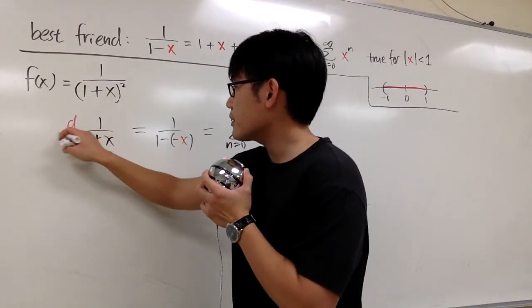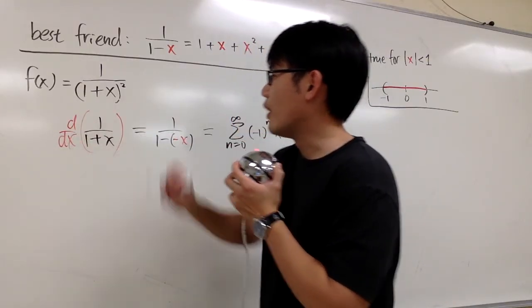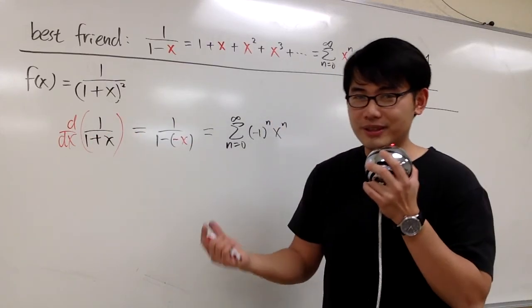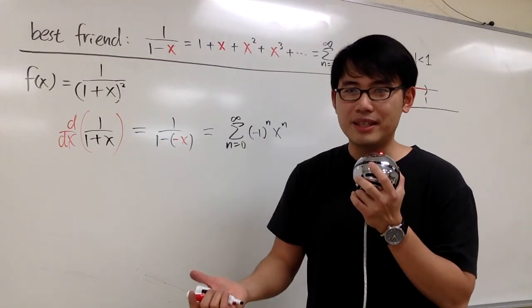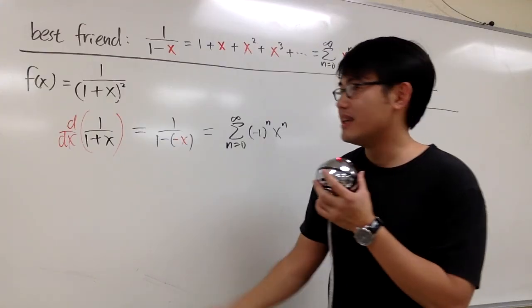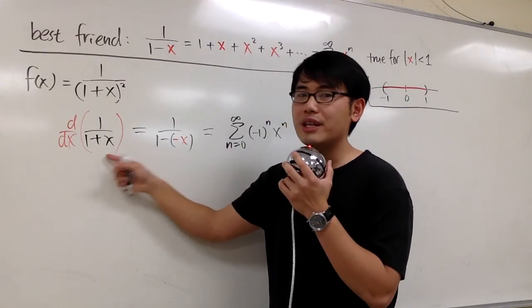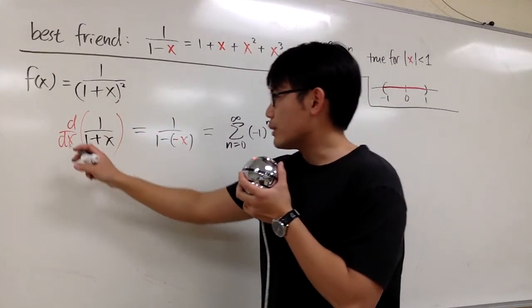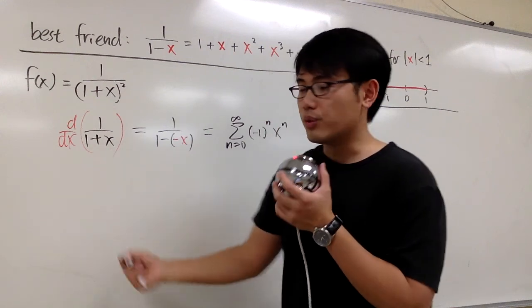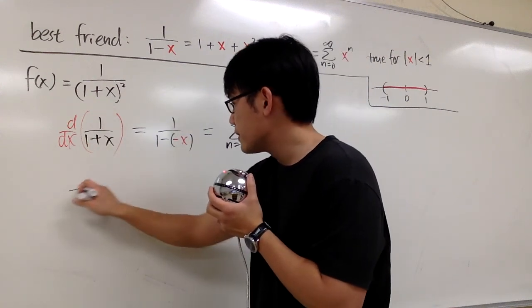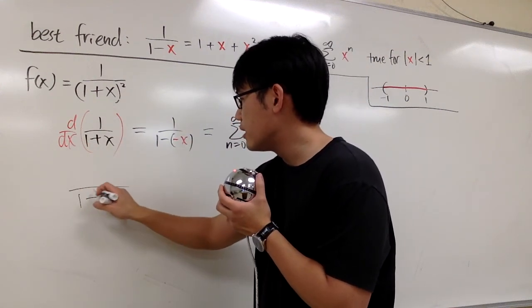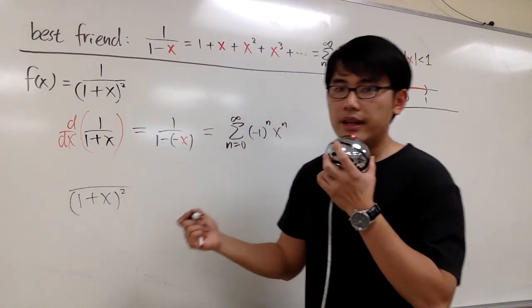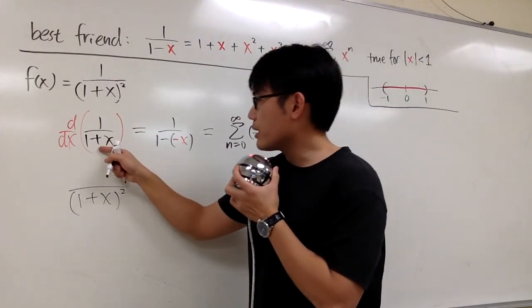Let's show how to differentiate 1 over 1 plus x. This is a quotient, and the quotient rule says we have to square the denominator. You can see that's a hint on why we should use differentiation, because this function has something squared in the denominator. Let's differentiate this with the quotient rule. We first look at the denominator, 1 plus x, put that in parentheses and raise it to the second power.